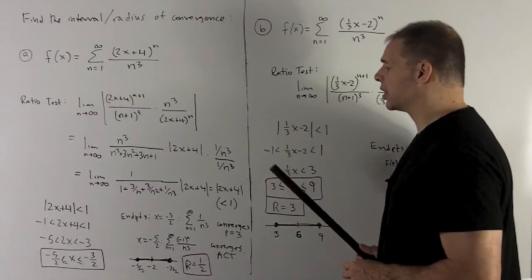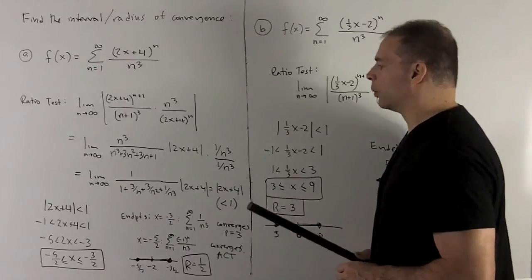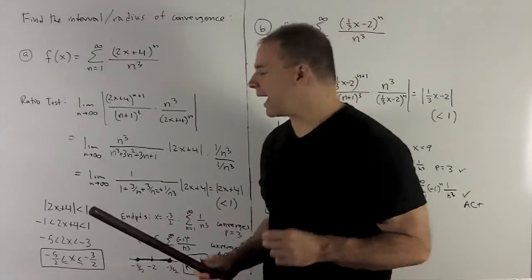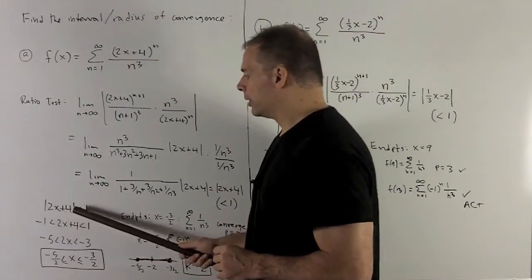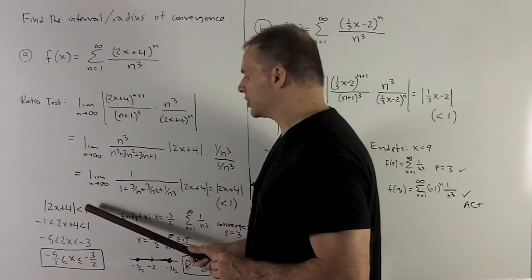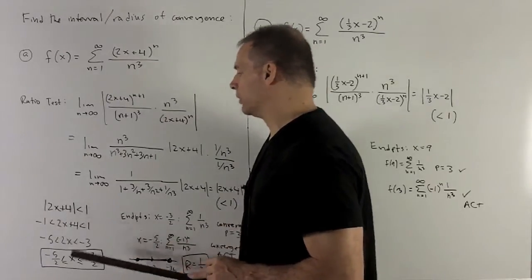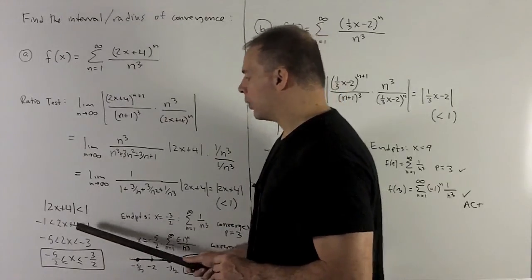So ratio test says we'll have convergence when this term is strictly less than 1. So let's decode that. This inequality here with the absolute value, the way we decode is I just take the 1, drop the absolute values, and then I put a minus 1 on the other side.